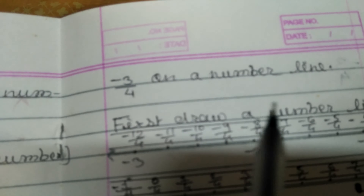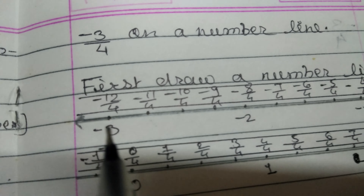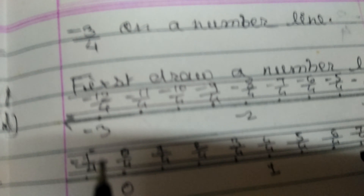Now we are going to study how to show rational numbers on a number line. Example: show the rational numbers 9 by 4, 2, and minus 3 by 4 on a number line. First, draw a number line.